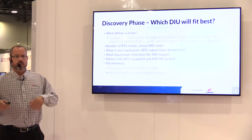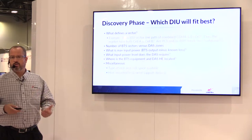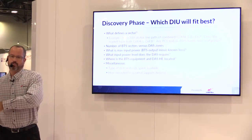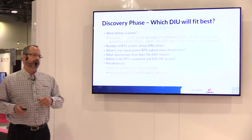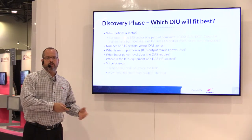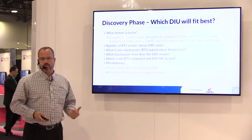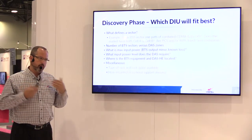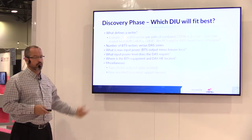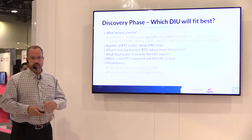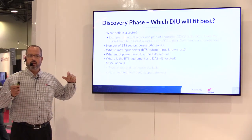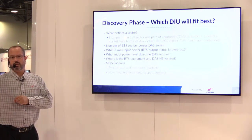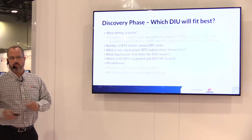Maximum input power. One of the biggest things that you run into in these situations is that you have a lot of power that needs to be conditioned way down to be able to apply it to a DAS. With that attenuation comes some heat, and environmental concerns come into play. What input level does a DAS require? There's a link budget involved in this just like any other system, so you've got to determine how much power you're going to come into the tray at, how much power you come out at, and then how much you need at the other end of that run going over to the fiber DAS.